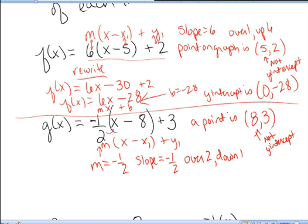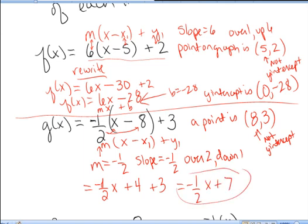Distributing that -1/2, I get -1/2x + 4 + 3. And so it's -1/2x + 7. When I write it this way, I see it's mx + b. And now I clearly see b is 7, (0, 7) is the y-intercept.